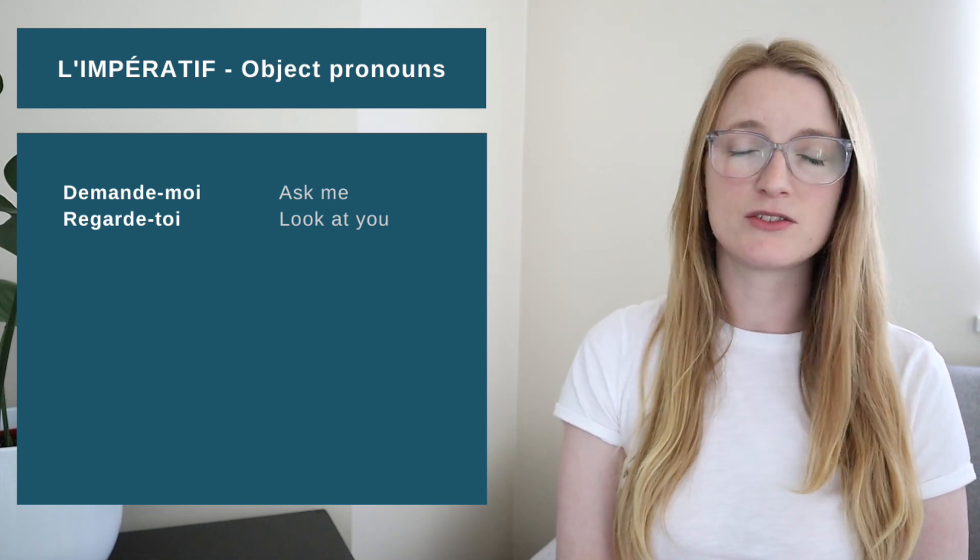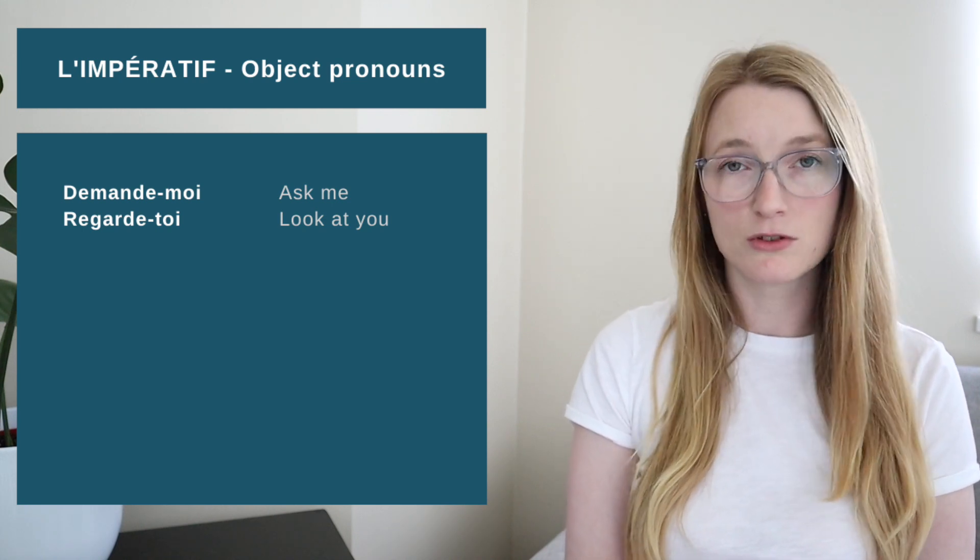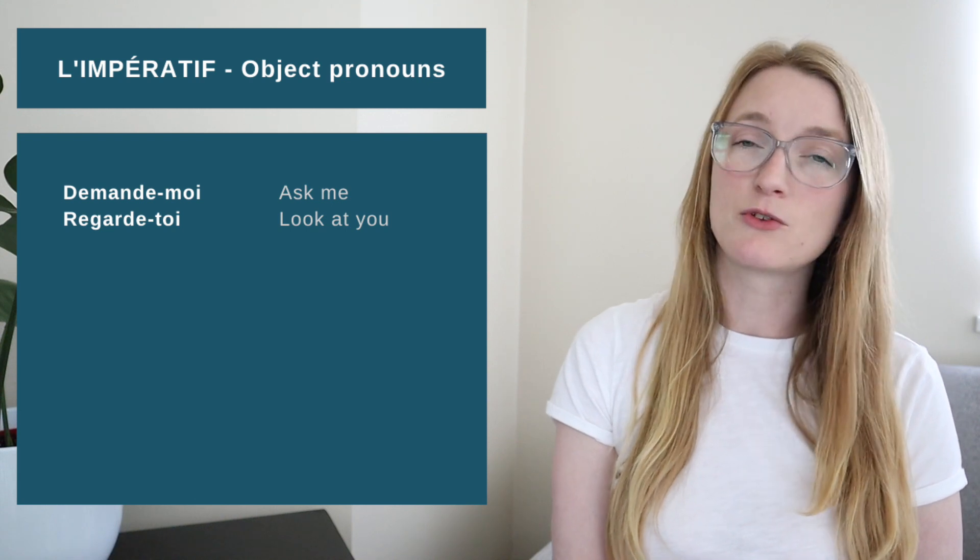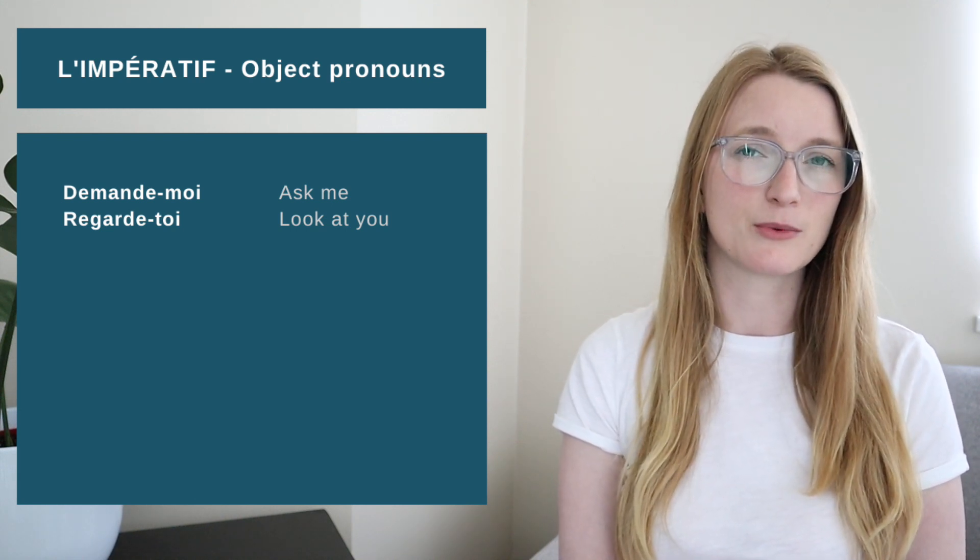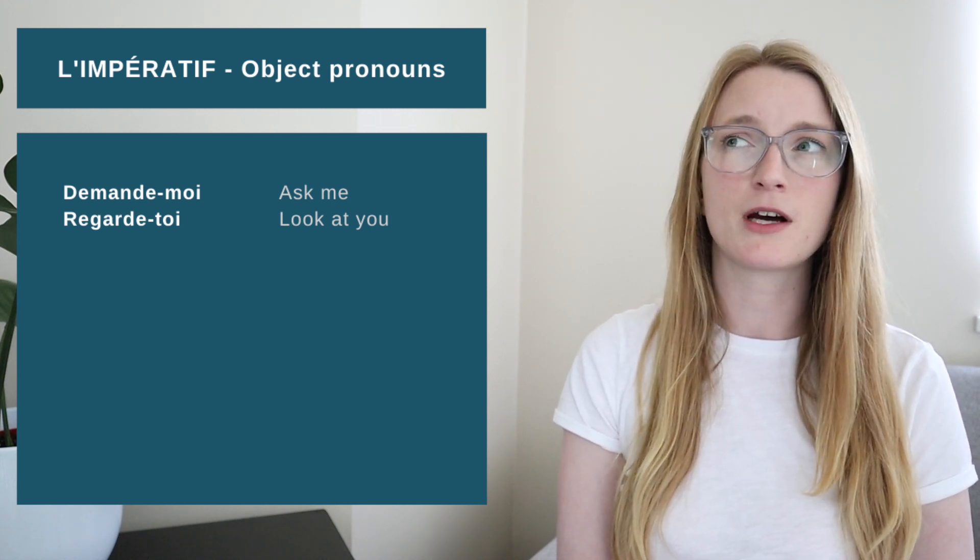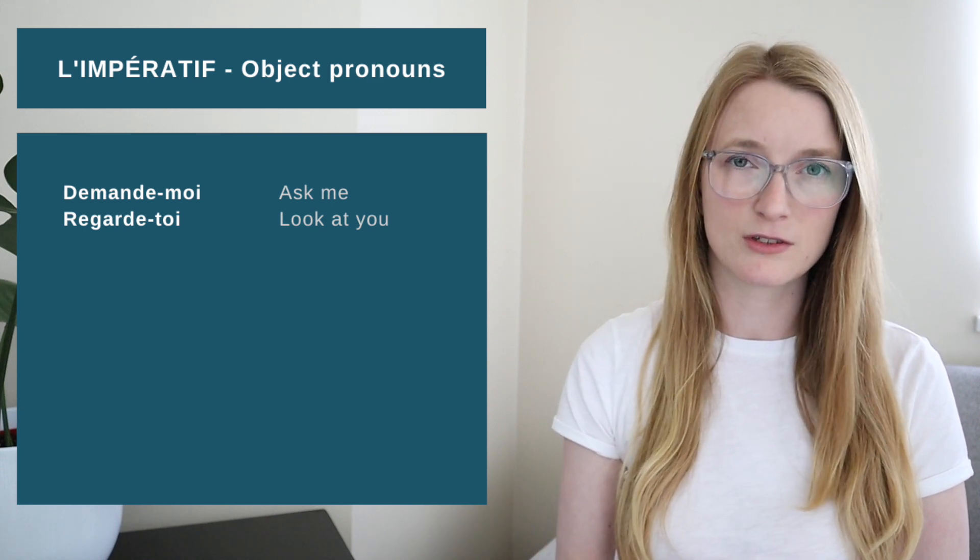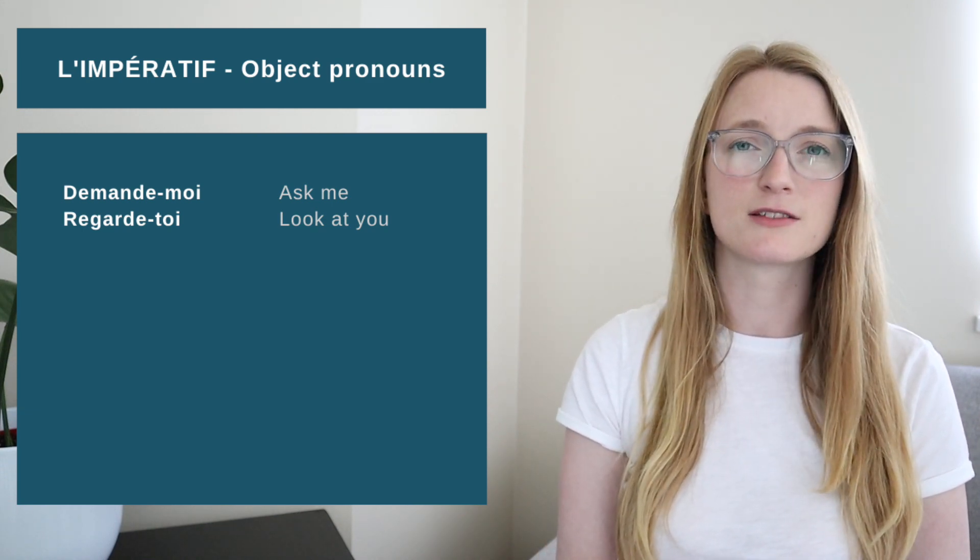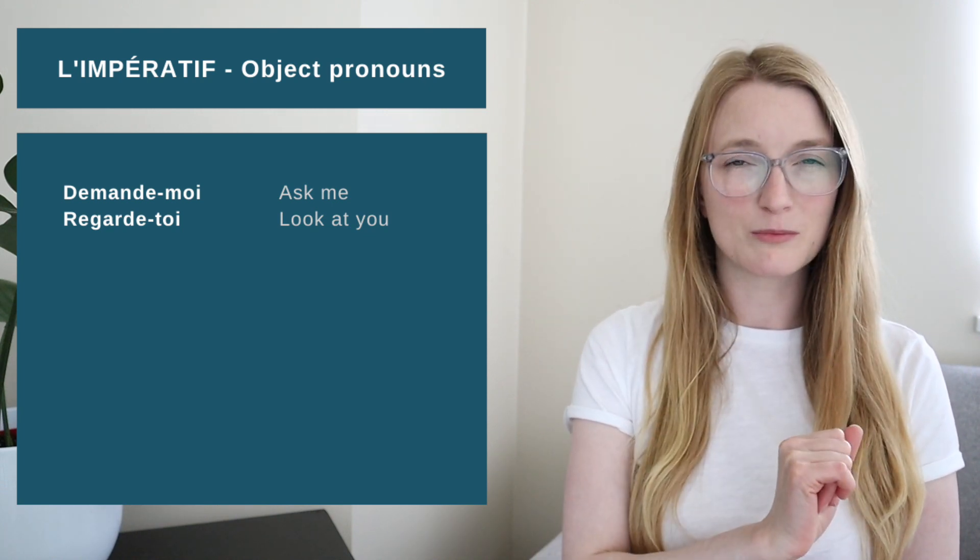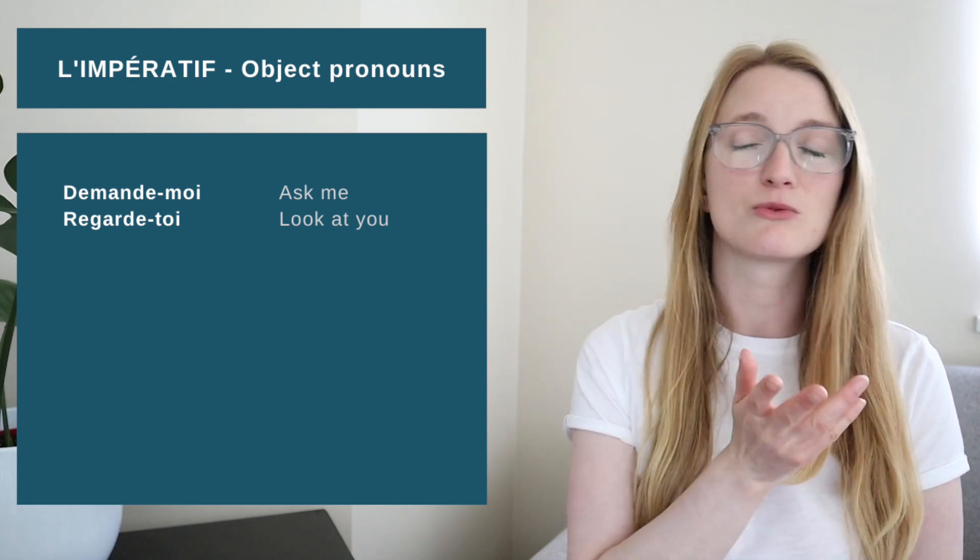Why? Well because if we keep Me and Te, we are going to have Demande-me and Regarde-te. But usually we don't pronounce the E in French at the end of a word. So that doesn't work. So we change them for Moi and Toi. But it doesn't work for Le, so don't keep the rule for Le. Only for Moi and Toi.